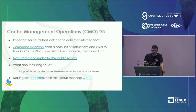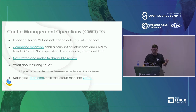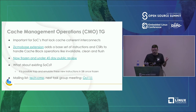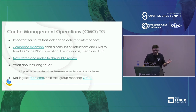One important group for a full OS like Linux is the cache management operations task group. For low-cost SoCs that want to handle DMA on non-coherent interconnects, they need to manage DMA coherency. Previously there was no way to do things like invalidate, clean, and flush the L2 cache. This extension is now under a 45-day public review, and hopefully going into next year it'll get ratified and people can build hardware with these new cache management instructions.